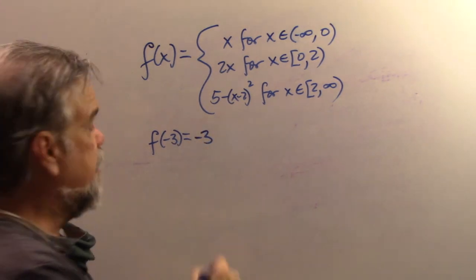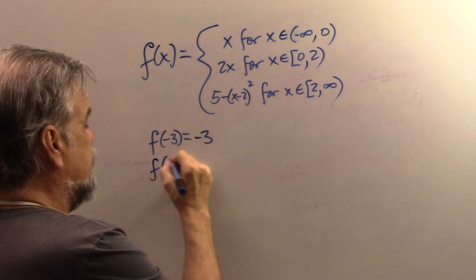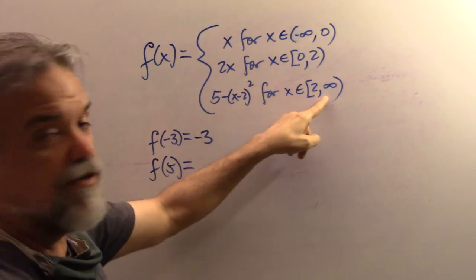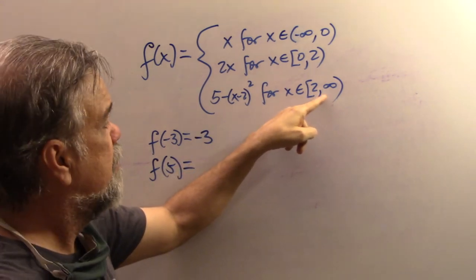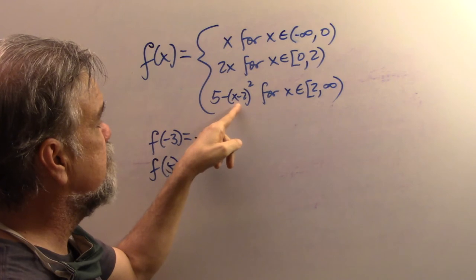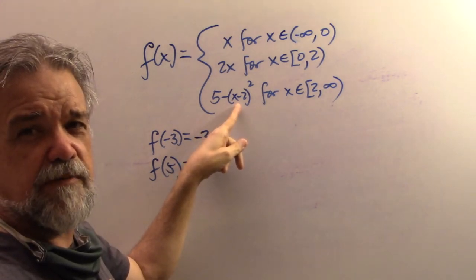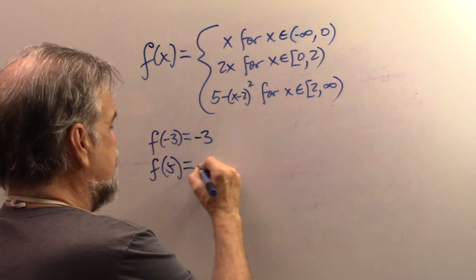What about F of five? Well, five is greater than two. It falls in that interval. So that means it's going to be five minus five minus two squared. Five minus two is three. Three squared is nine. Five minus nine is negative four.